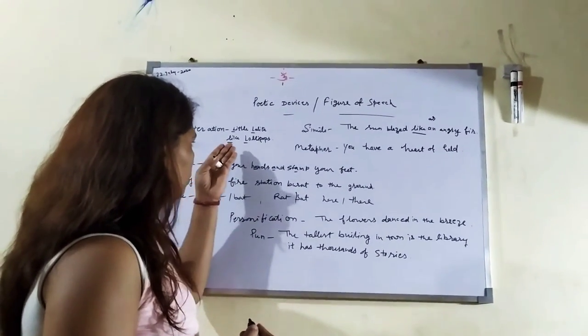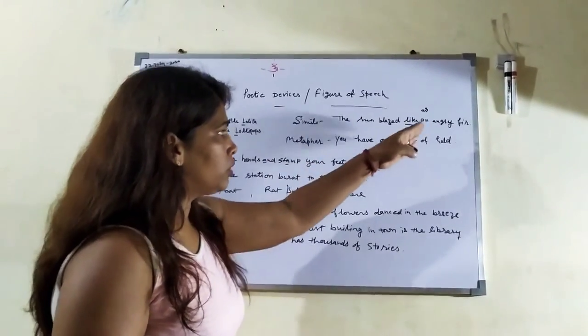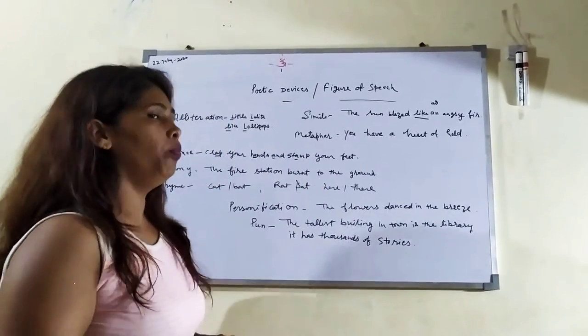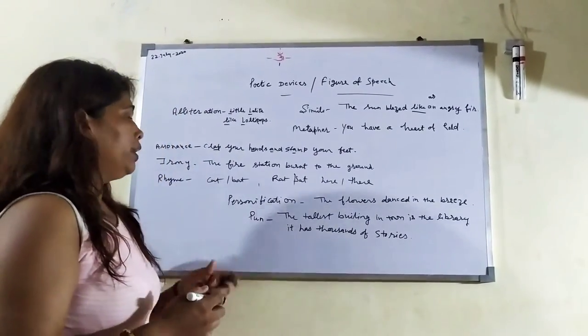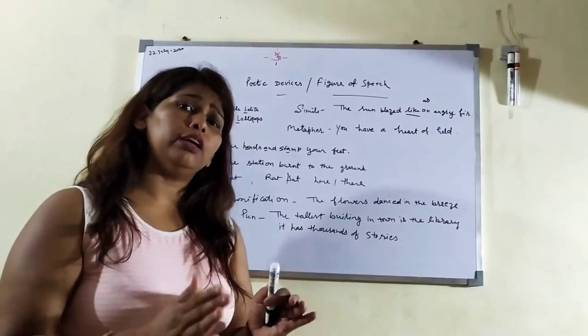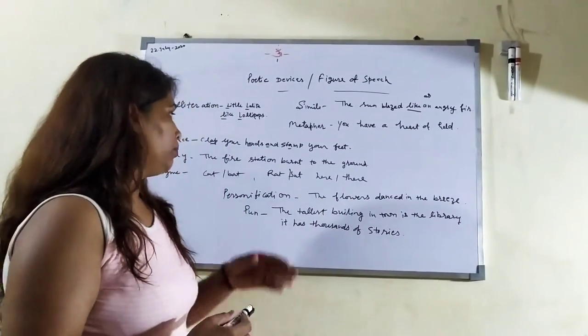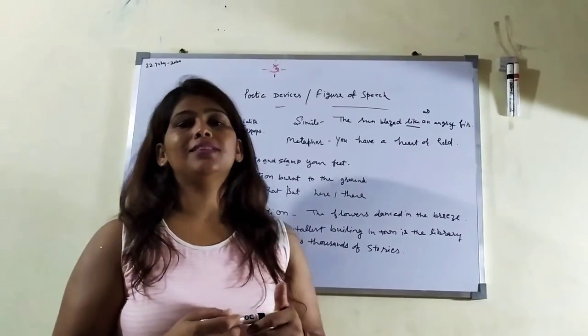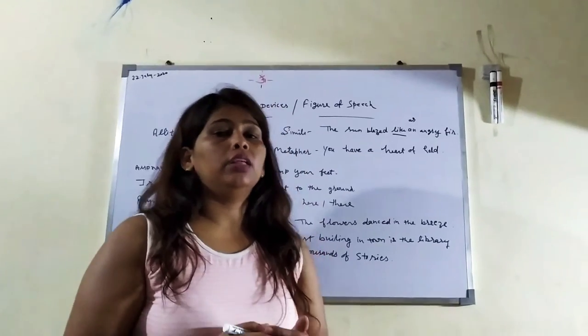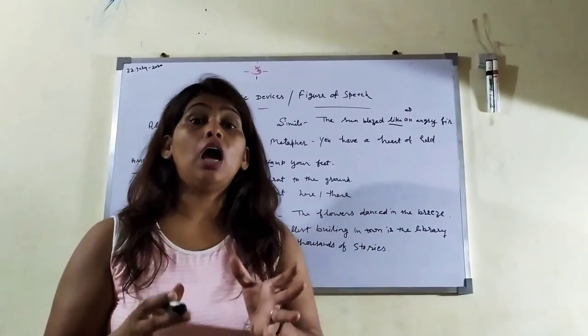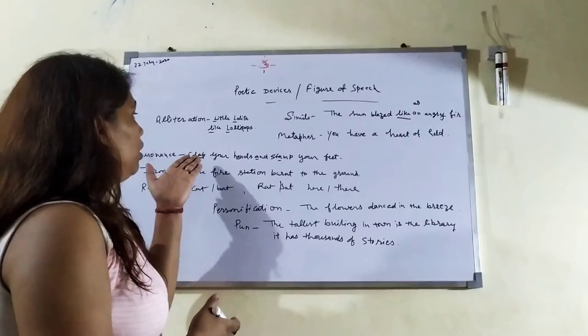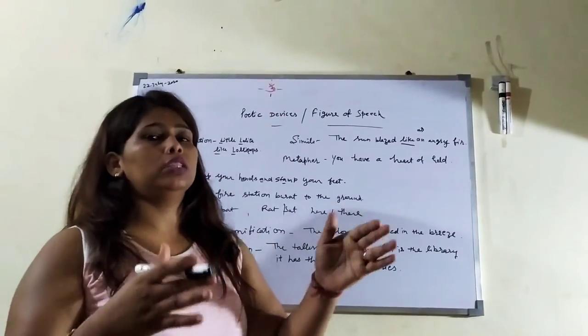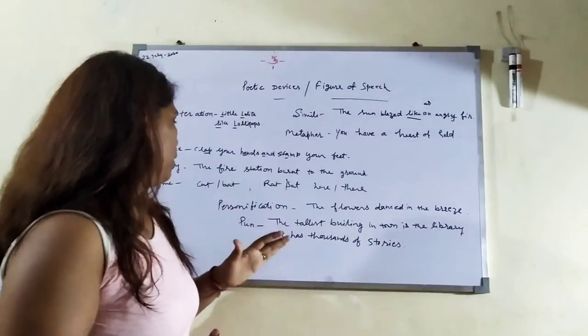Where the vowel repeats, that is assonance. And where the alphabet repeats, that is alliteration. Where the comparison 'as' or 'like' is used, that is simile. Where you say you are not this but this, that is metaphor. Next is irony. Irony here is a comment which conveys the opposite. For example, the fire station burnt to the ground.